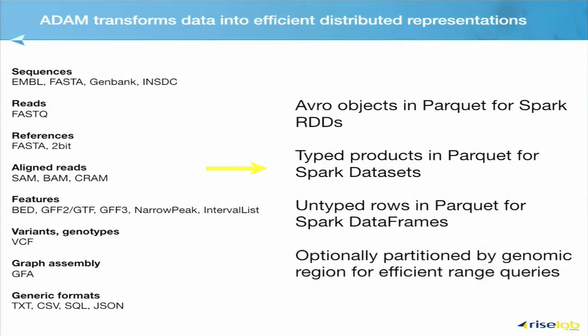ADAM supports a few different ways of representing these data types in Spark. The Spark version 1 main model was something called an RDD — data in flat file would be represented as Avro Java objects in RAM, written out to disk as Parquet. The newer models in Spark are datasets and dataframes: if you're working in datasets, you get typed Scala products; in dataframes, you get untyped rows. For range queries, we can also add genomic range partitioning to the data on disk, so all data in specific genomic ranges can be co-partitioned together for efficient compute.